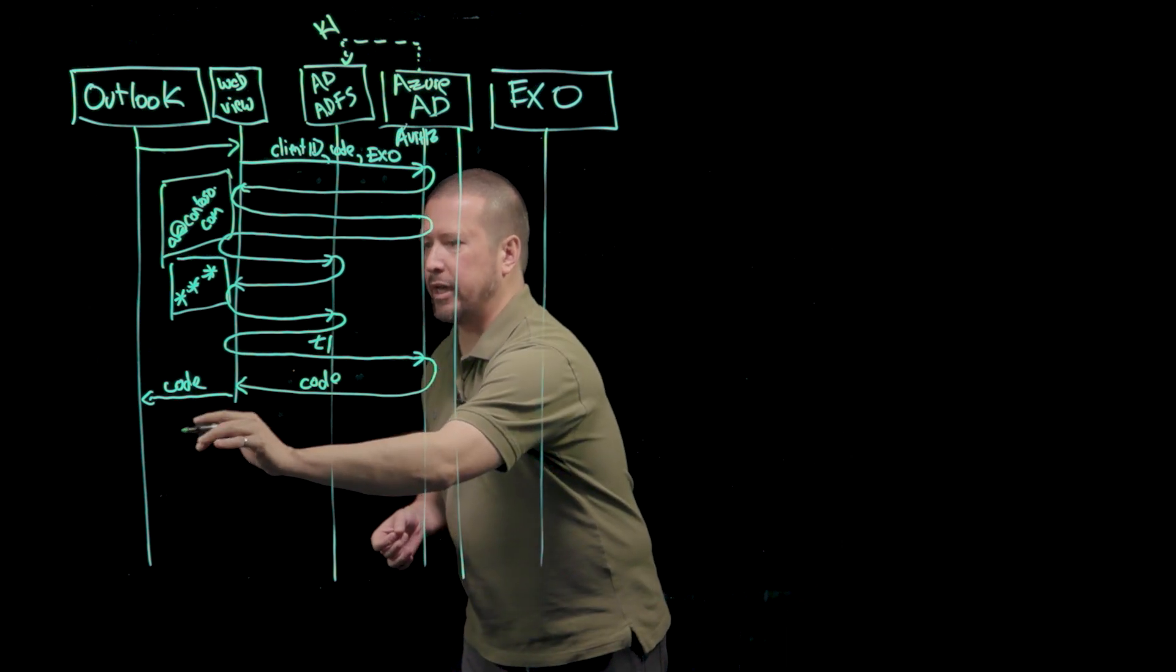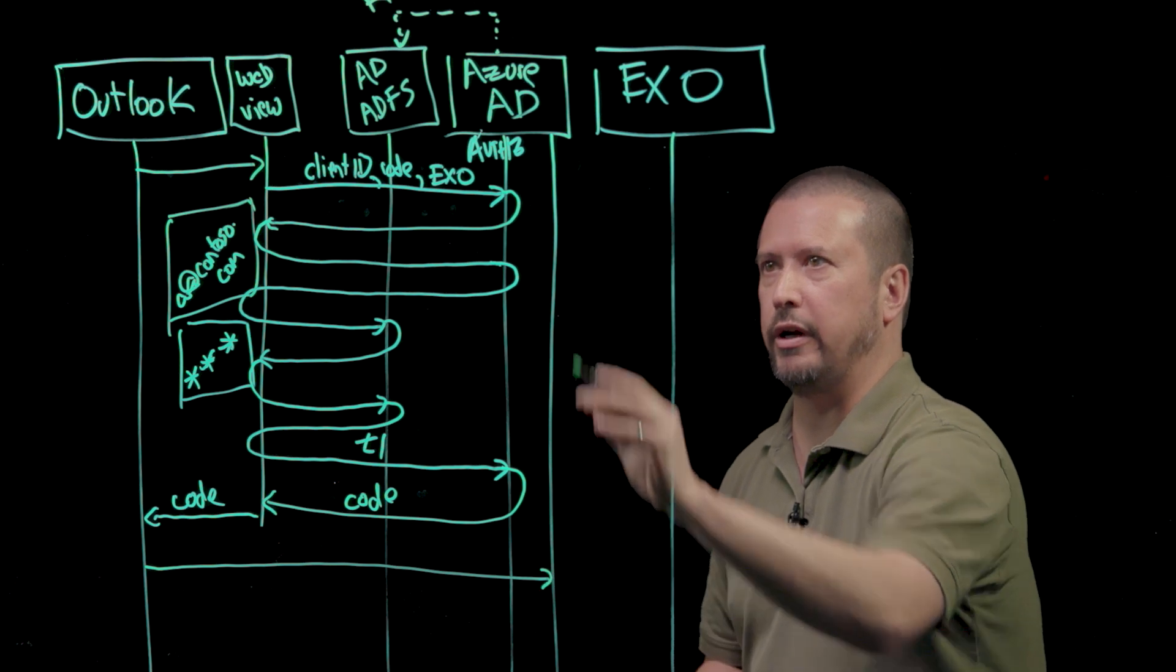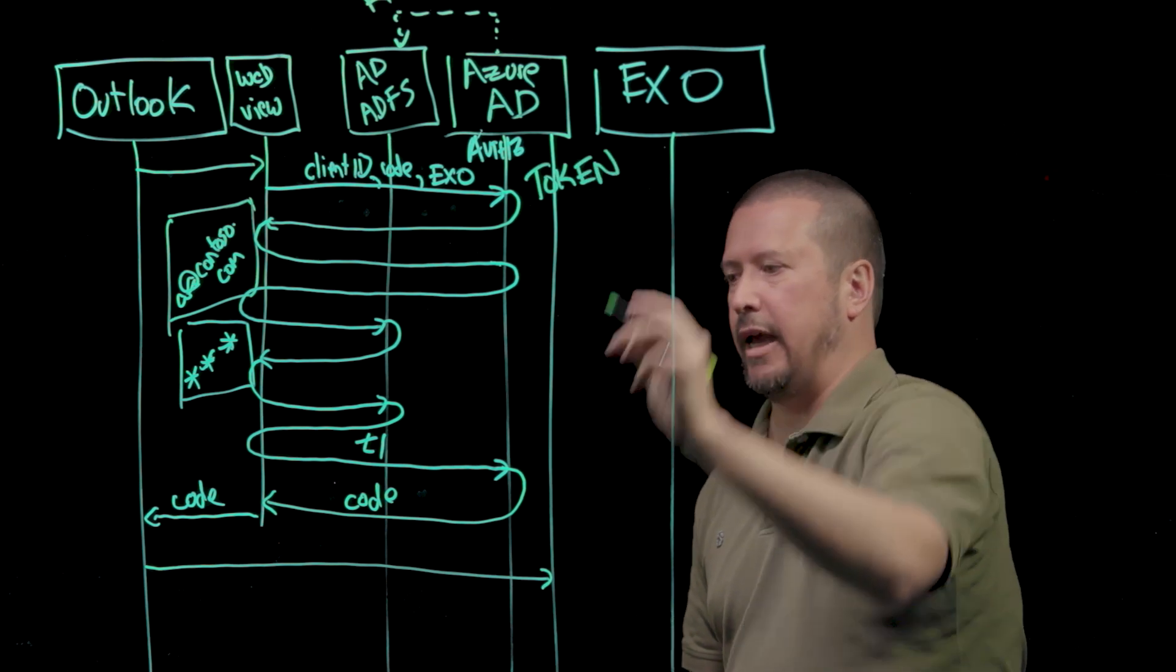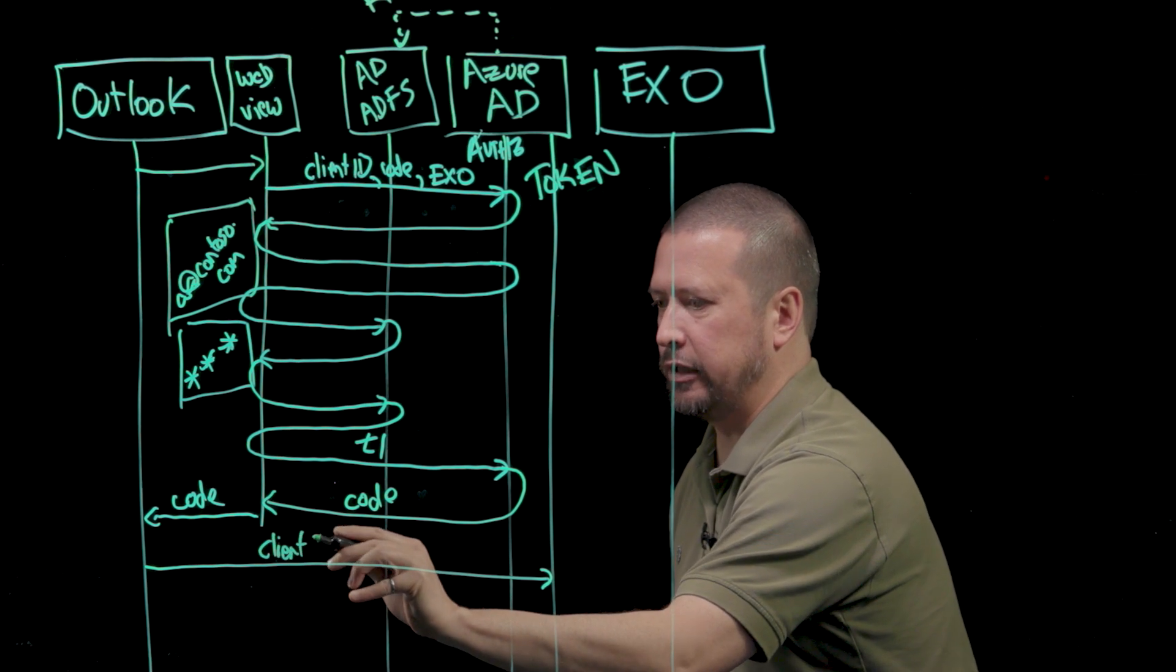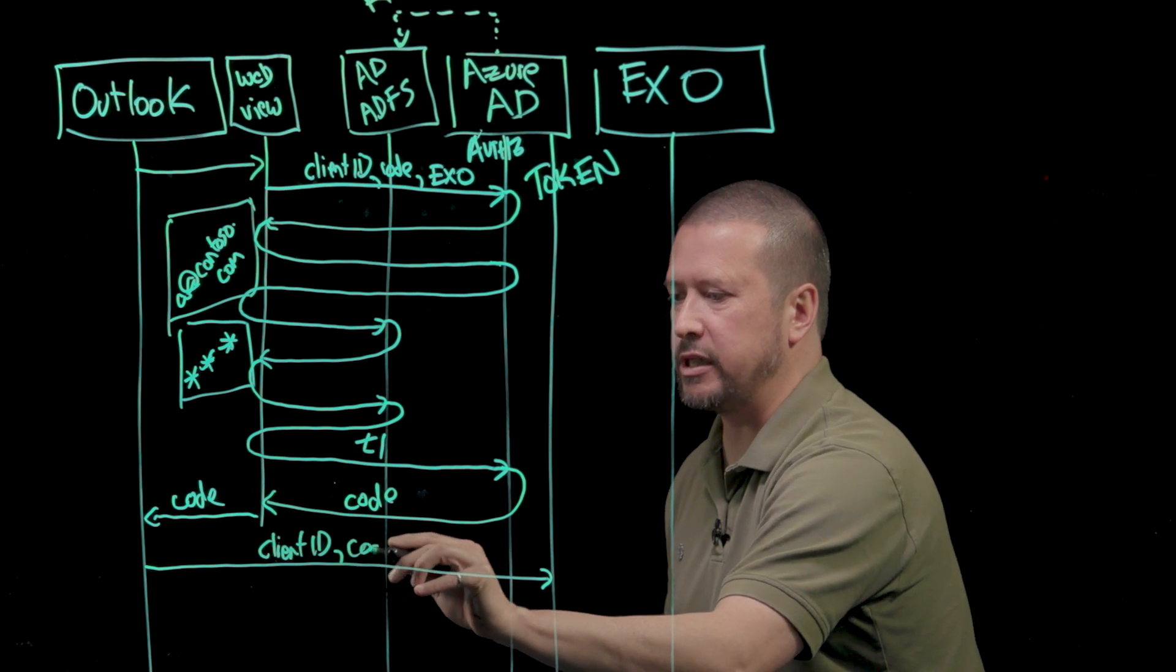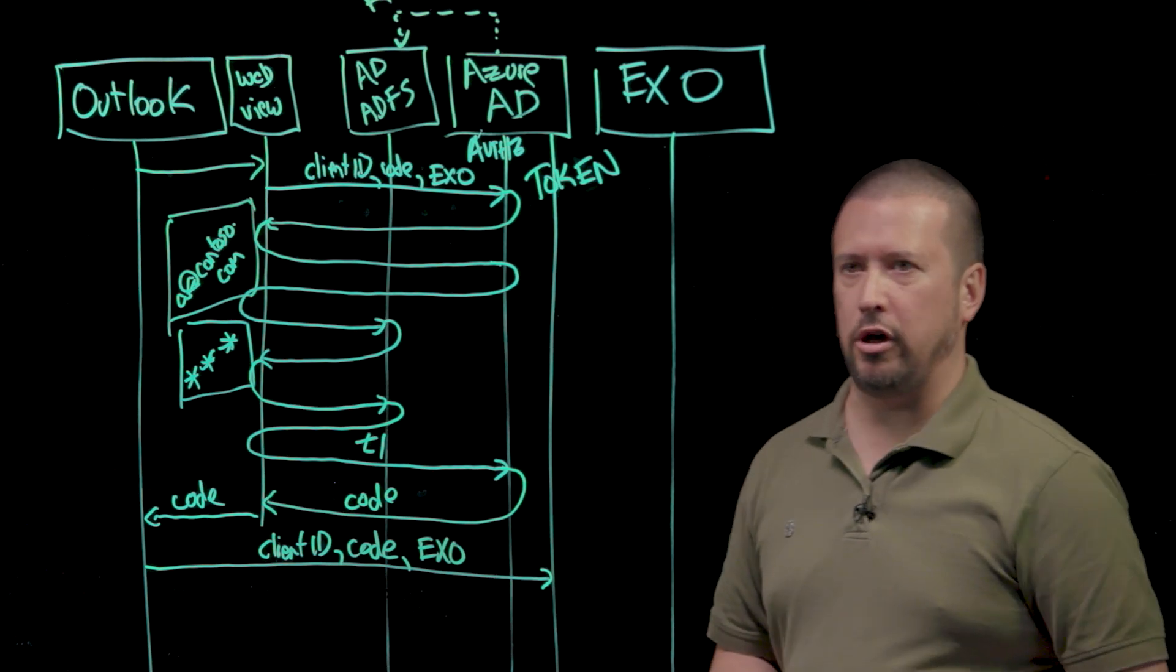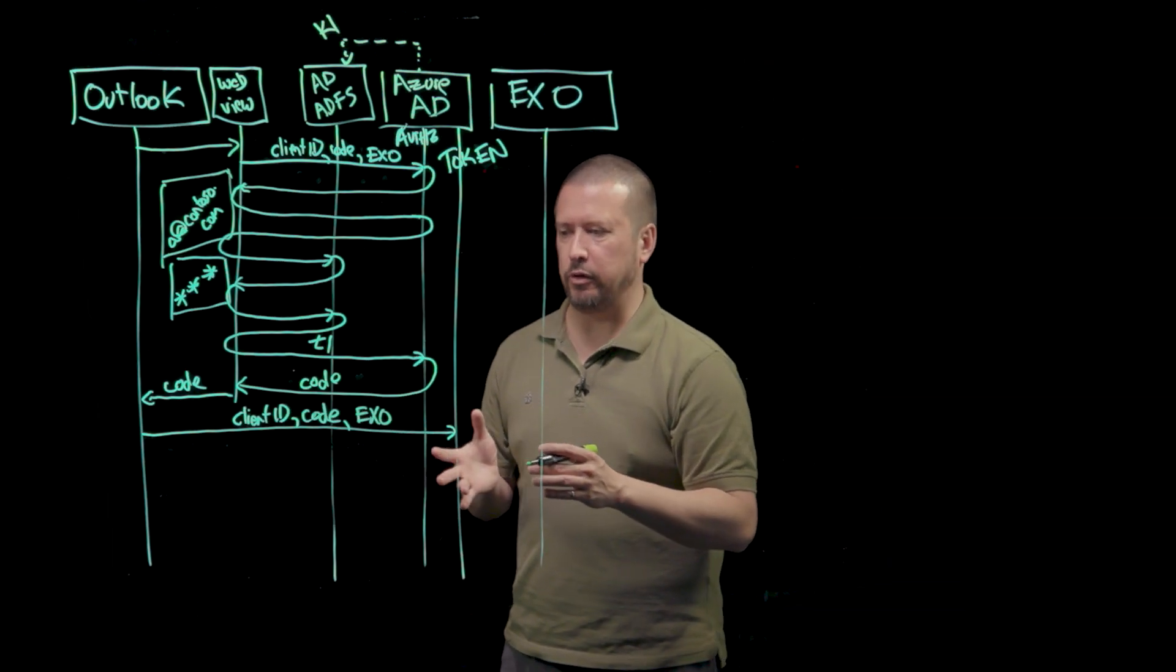Now that Outlook has the code, it can send that code to this other endpoint on Azure Active Directory, which is the token endpoint. It will pass along its client ID to indicate this is Outlook, the code that it received, and the fact that it wants a token for Exchange Online.